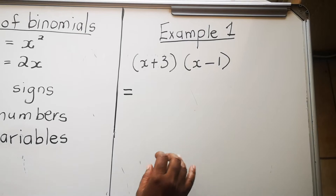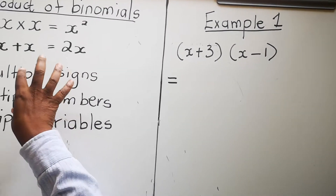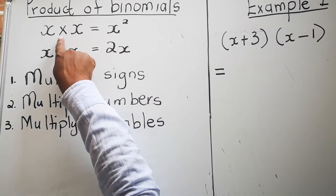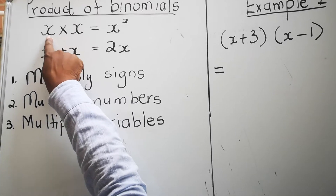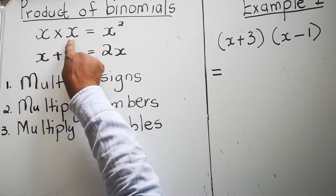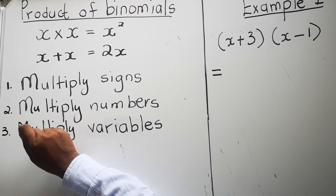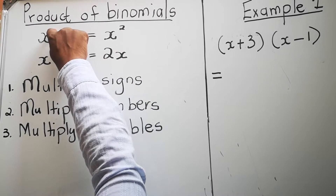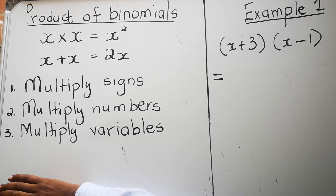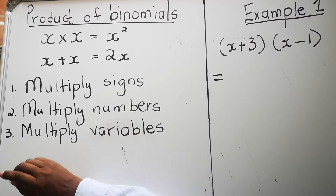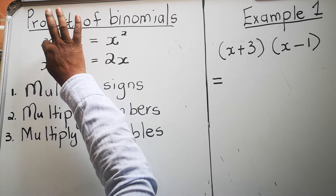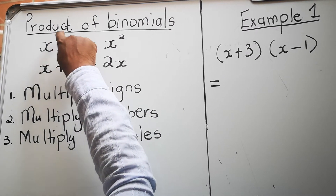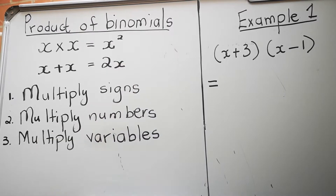Before we multiply the binomials, I want to remind you of the difference between multiplying and adding. When you are multiplying variables, x times x — the law of exponents says if the bases are the same and you're multiplying, you add the exponents. You have an exponent of one here and an exponent of one there. In maths we don't write things we all know, so any variable without a written exponent has an exponent of one. You keep the same base and add: one plus one is two, so x times x equals x squared.